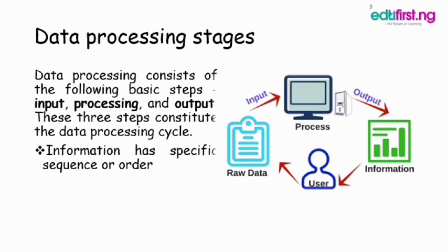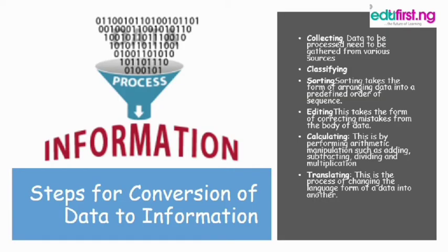Information has a specific sequence or order. The user gives a raw fact as an input to the computer, the computer or system processes it, and then it gives an output. This output is the information, which is then useful to the user for decision-making. Lastly, we'll look at the steps for conversion of data into information.